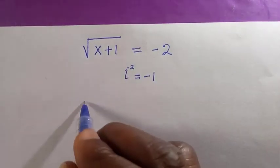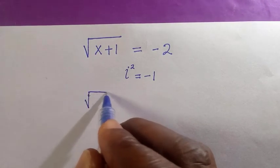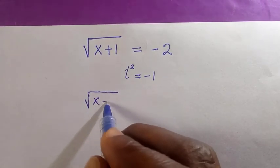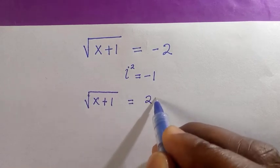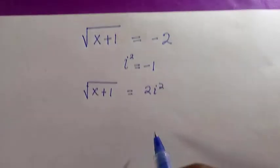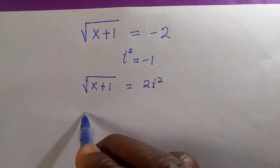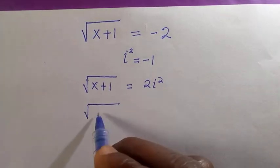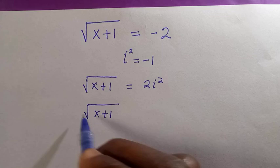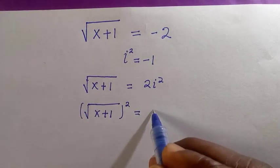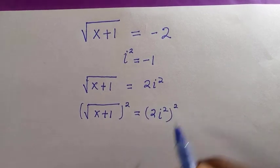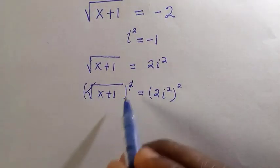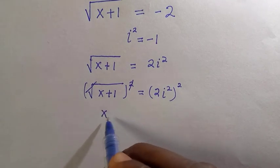If I try to rewrite this problem as the root of x plus one equals 2i raised to the power of two, it's still minus two according to the assumption above. If I take the square of both sides just to cancel the root at the left-hand side, we have (2i)² or 2i raised to power of two. The square cancels the square root, so we have x plus one equals 4i raised to the power of four.